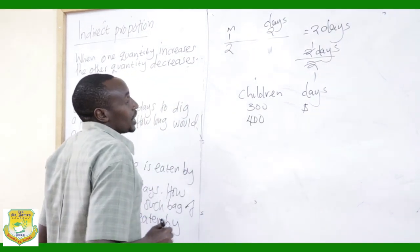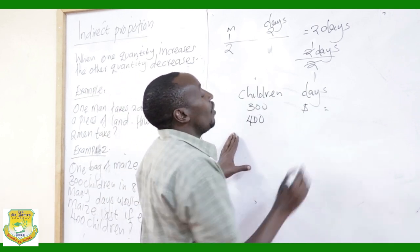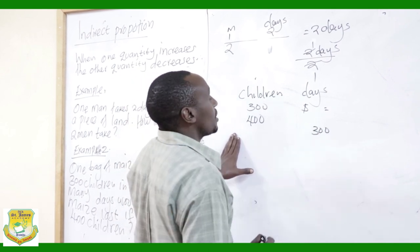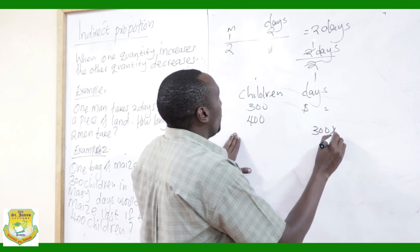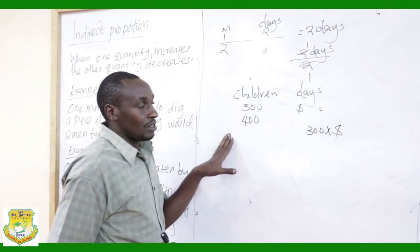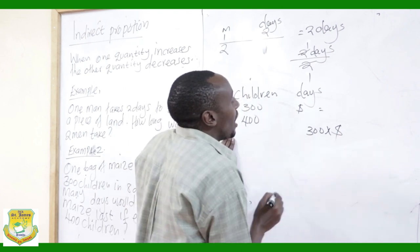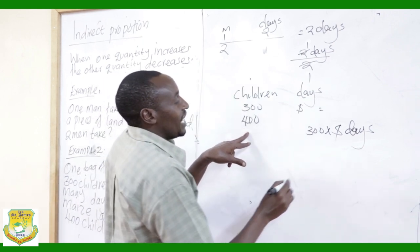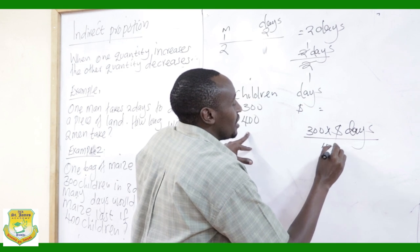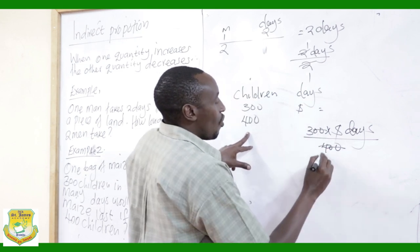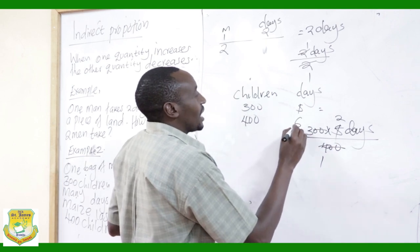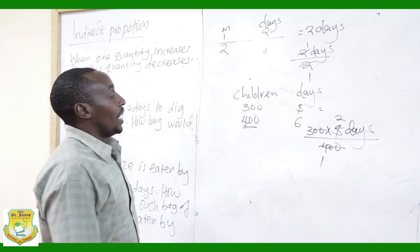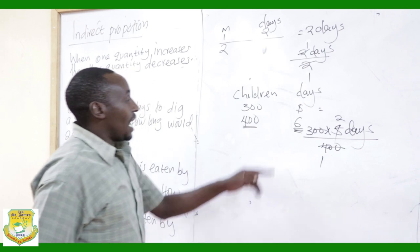We give this amount of food to one child. One child will take 300 times 80 days. Then, if there are 400 children, we divide that amount by 400. Cancelling gives 60 divided by 10, which gives 60 days. So if there are 400 children, the bag will last 60 days.